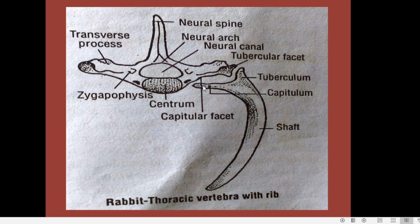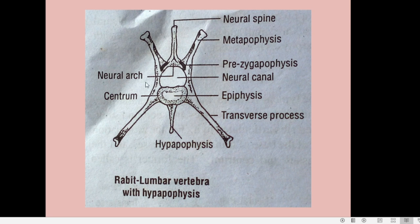The lumbar vertebra is the largest of all vertebrae and is considered the typical vertebra. One special feature is that the first and second lumbar vertebrae possess a process called the hypapophysis attached to the ventral side of the centrum. All other structures — pre-zygapophysis, post-zygapophysis, metapophysis, and anapophysis — are the same as described for the typical vertebra.